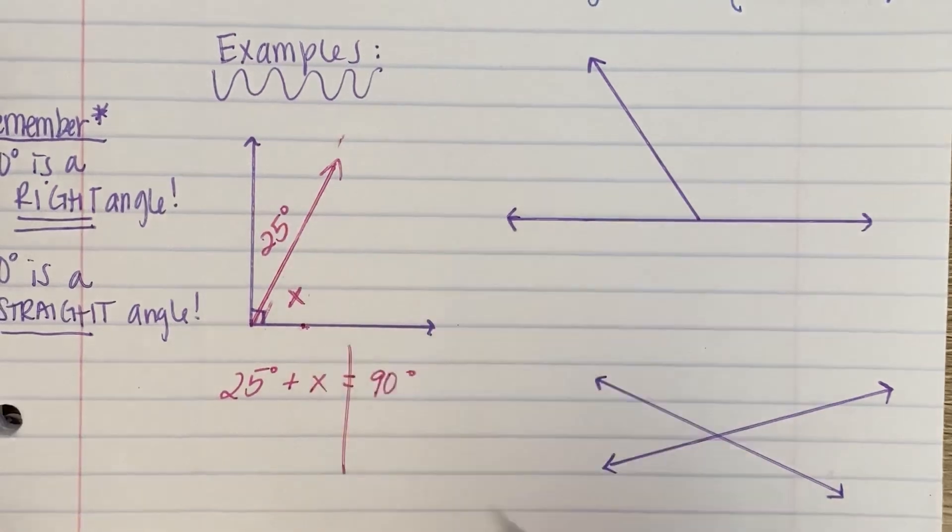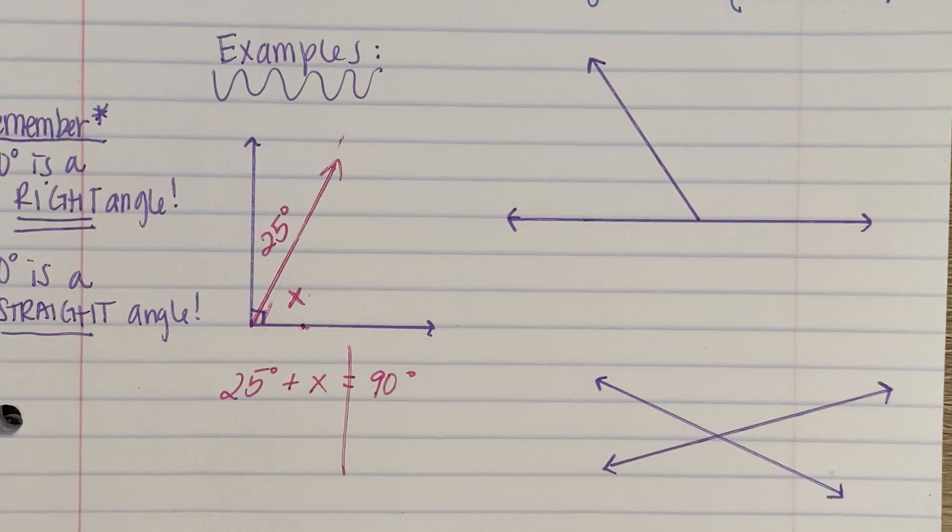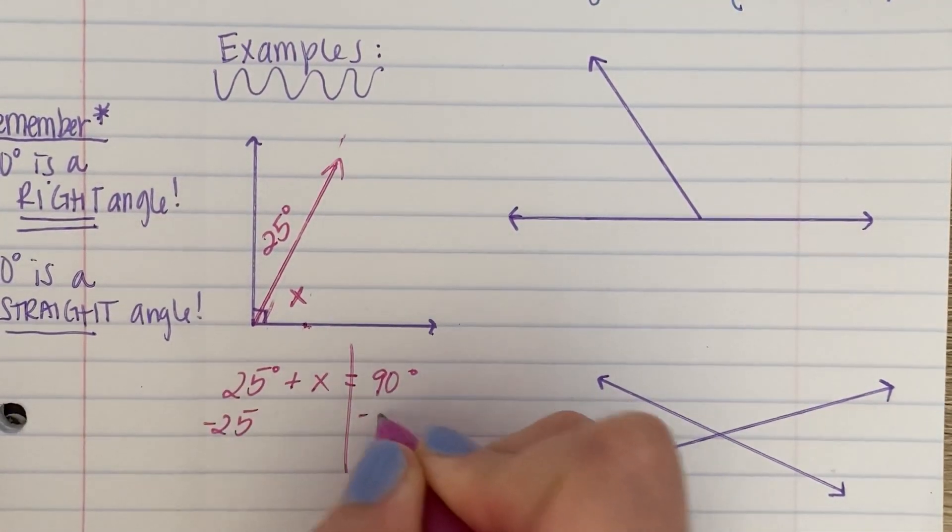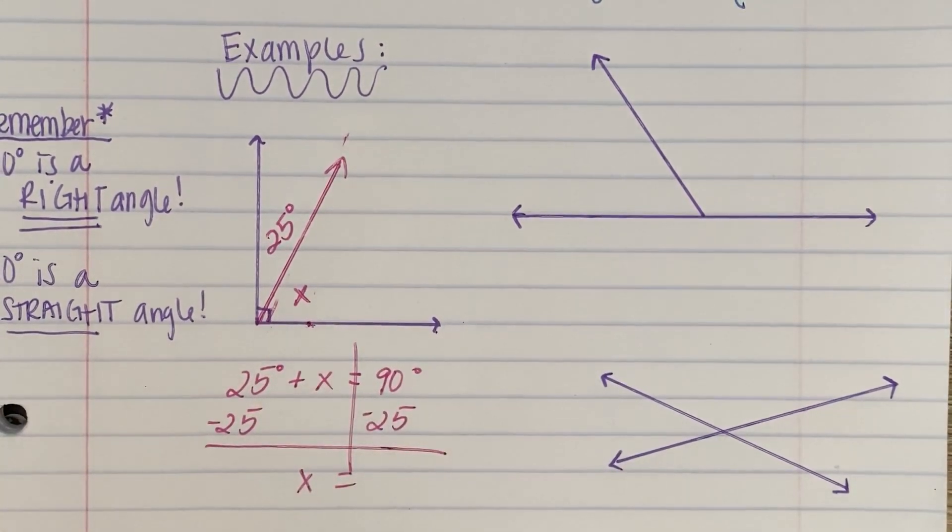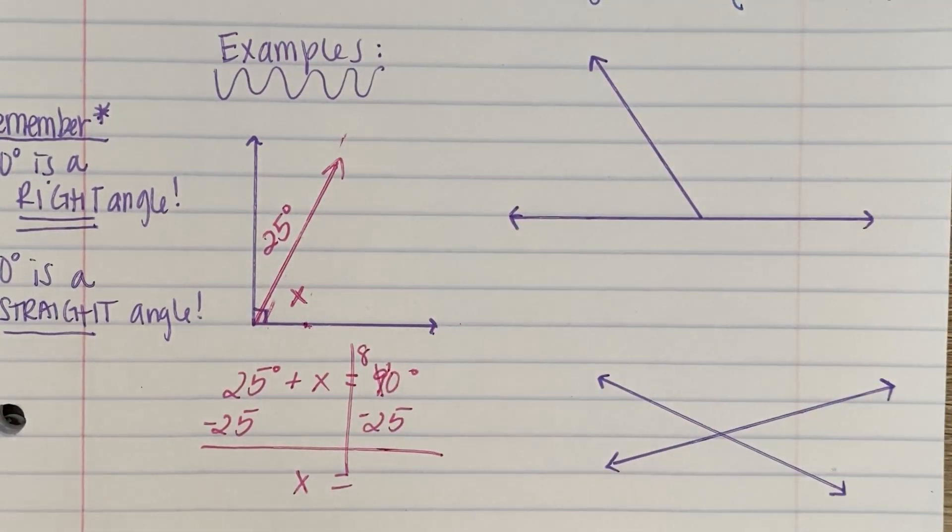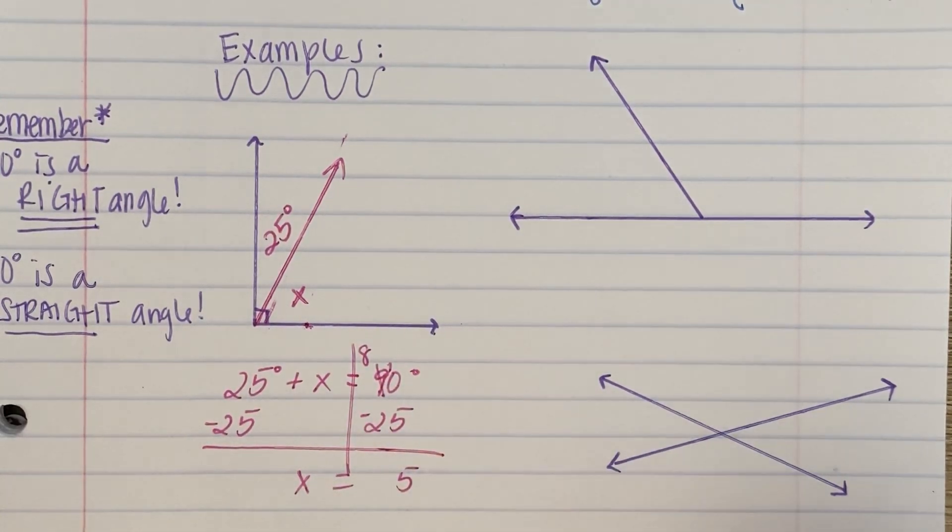And then, draw a line down the equal sign. Find the side with the variable. Find the number not attached to the variable and perform the opposite operation. You guys probably heard me say these words about a billion times this year. So I'm going to go ahead and subtract 25. So what is our unknown angle? X is equal to, let me go ahead and show my work on this. Borrow 10 minus 5 is 5, 8 minus 2 is 6. 65 degrees.